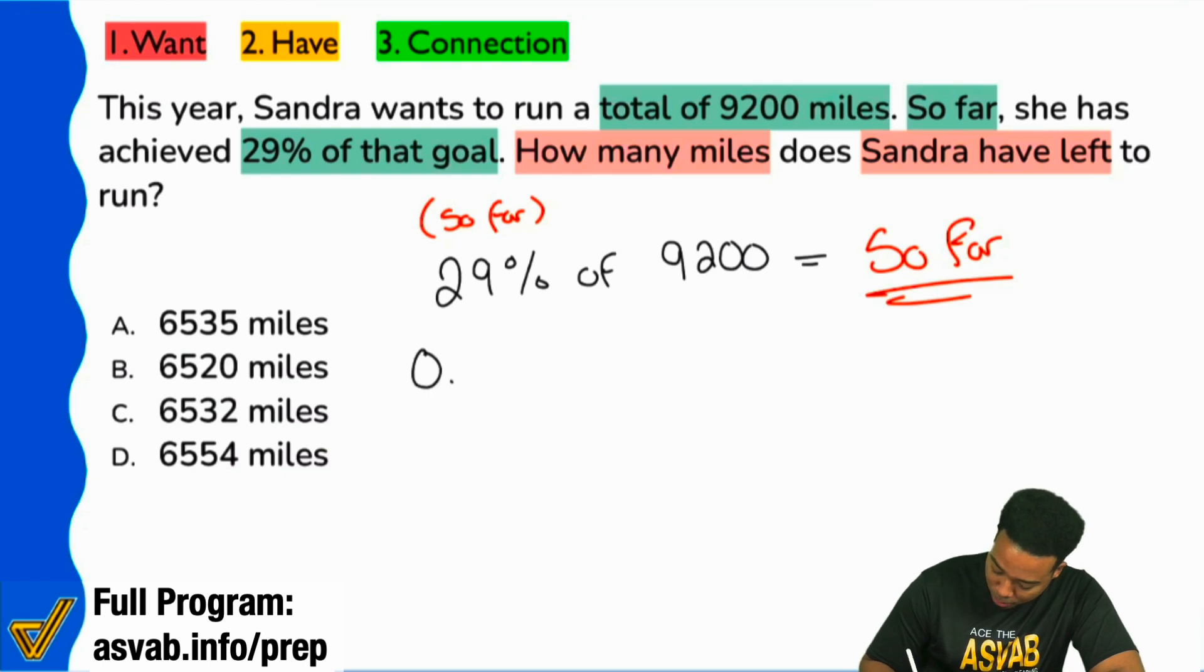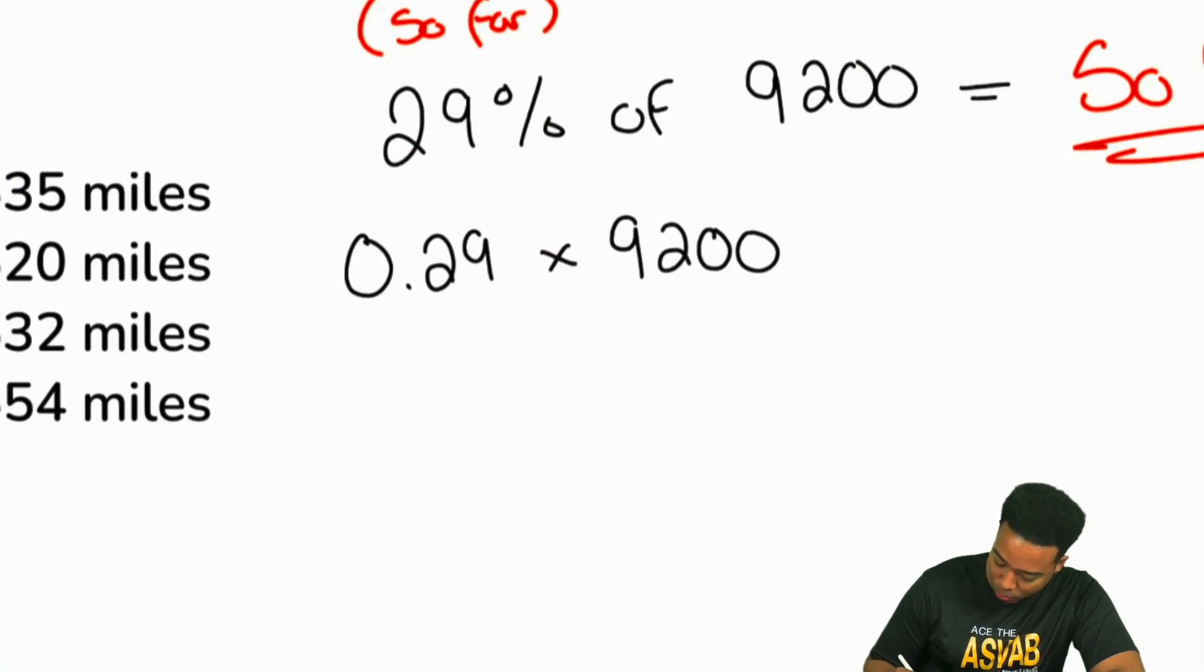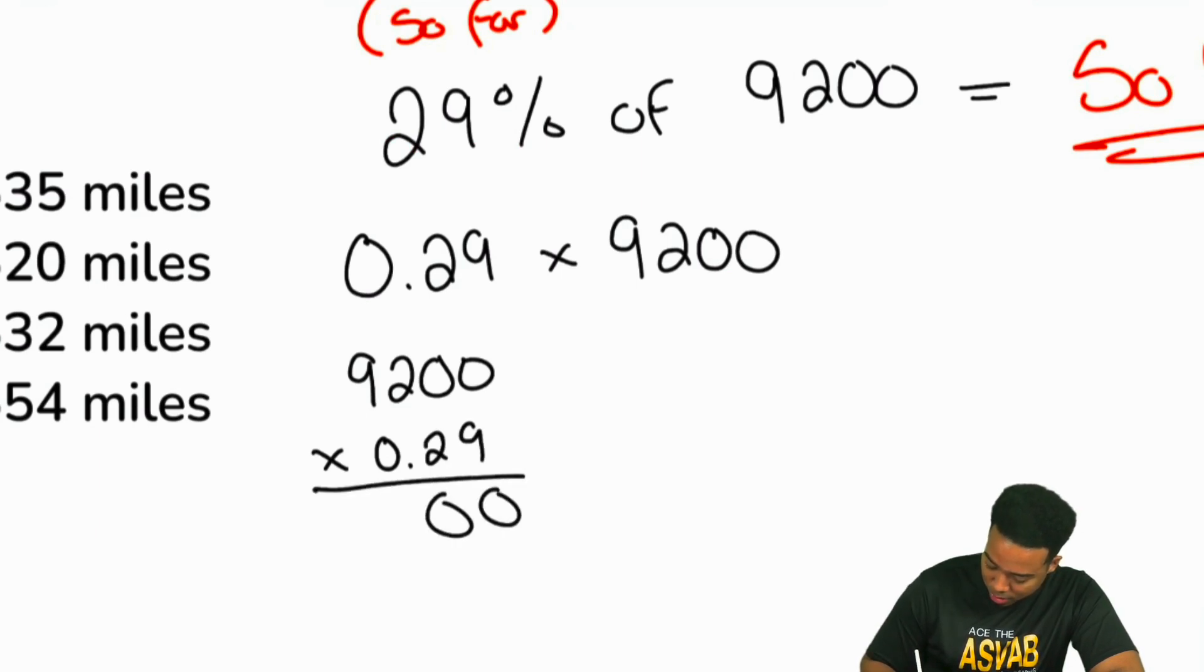We can say 29%, which converts into 0.29 times 9,200. We can do the math right over here on the side. Once we do this, 0 times that, 0 times that, 2 times 9 is 18, 9 times 9 is 81, carry the 1 is 82.